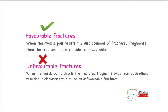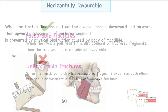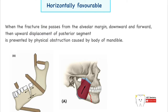Depending on this, we classify fractures as favorable or unfavorable. When the muscles prevent displacement of the bony fragments, we classify such a fracture as favorable. On the other hand, when the muscle pull tends to displace those bony fragments away from each other, we classify the fracture as unfavorable.